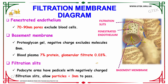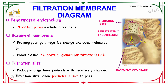The filtration slits are in the outermost layer, and these filtration slits have podocyte arms with pedicels with negatively charged filtration slits, and they allow particles less than 3 nanometers to pass. So the first region of filtration is your filtration slit, followed by the removal of molecules in the basement membrane, and then filtering of blood cells in the fenestrated endothelium. So this is the filtration membrane and its parts.